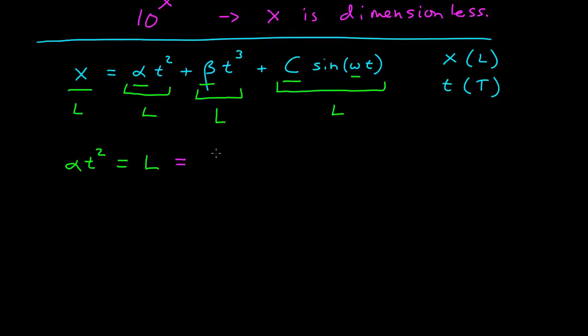And so then I need the dimension of the t squared, and it's a time. The solution to that is then L over t squared. So the units of alpha, then, is length over t squared.